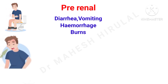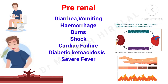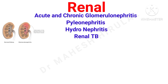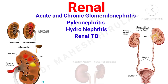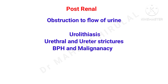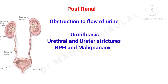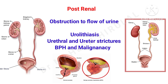Severe diarrhea and vomiting, hemorrhage, burns, shock and cardiac failure will lead to low perfusion to the renal system and result in renal dysfunction. Diabetic ketoacidosis and severe fever will also lead to renal dysfunction. Acute and chronic glomerulonephritis, pyelonephritis, hydronephritis and renal tuberculosis are major renal pathologies where renal function is deranged. Obstruction to the flow of urine by urolithiasis, urethral and ureter strictures, BPH and malignancies will also lead to renal damage.